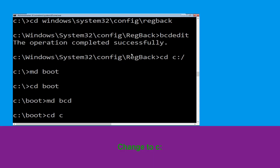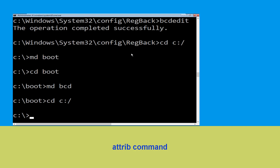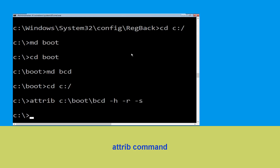Type: cd C:\ and hit Enter. Now execute this command: type attrib C:\boot\bcd -h -r -s and hit Enter.